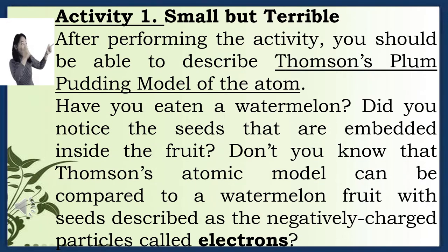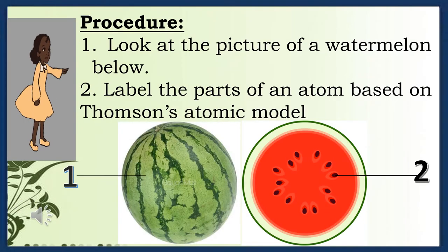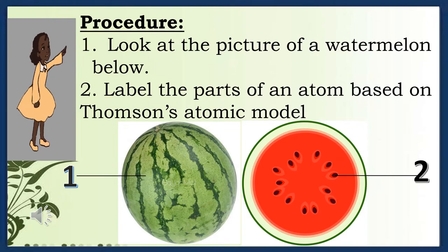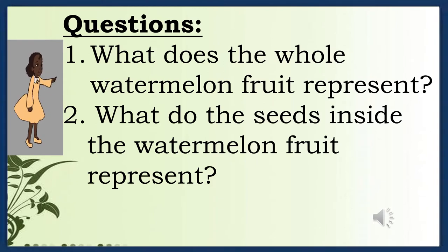Activity 1: Small but terrible. After performing the activity, you should be able to describe Thomson's plum pudding model of the atom. Have you eaten a watermelon? Thomson's atomic model can be compared to a watermelon fruit, with the seeds described as the negatively charged particles called electrons. Label the parts of an atom based on Thomson's atomic model. Number 1 is atom; number 2 is electron. The whole watermelon fruit represents the atom, and the seeds inside represent the negatively charged particles called electrons.